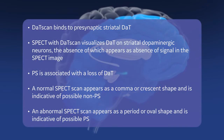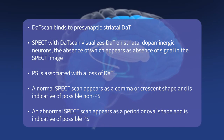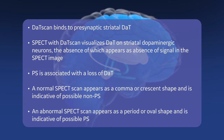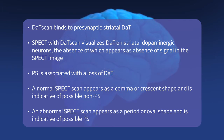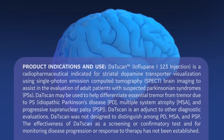In summary, DATSCAN binds to presynaptic striatal DAT. SPECT with DATSCAN visualizes DAT on striatal dopaminergic neurons, the absence of which appears as absence of signal in the SPECT image. PS is associated with a loss of DAT. A normal SPECT scan appears as a comma or crescent shape and is indicative of possible non-PS. An abnormal SPECT scan appears as a period or oval shape and is indicative of a possible PS. See the important safety information that follows.